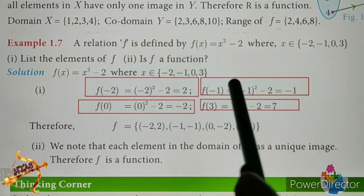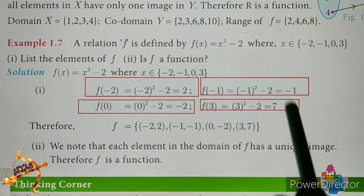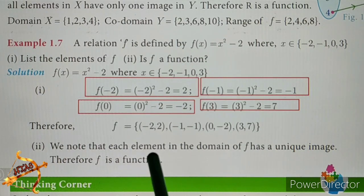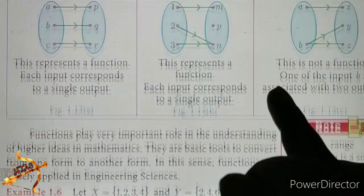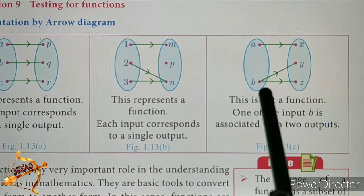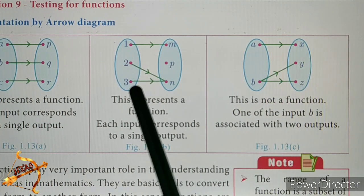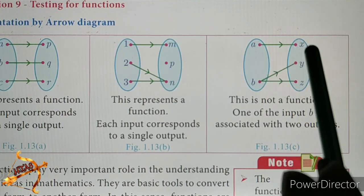Domain is the left hand side and right hand side is the codomain. This is a function. Each element in the domain of f on the left hand side maps to a unique value. Therefore, f is a function. This means one answer — that is unique.